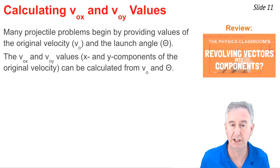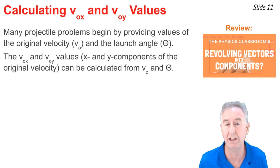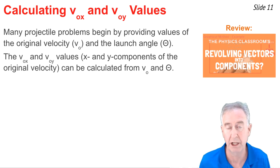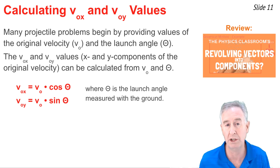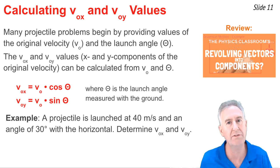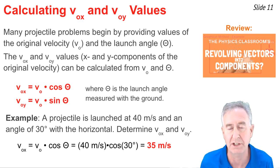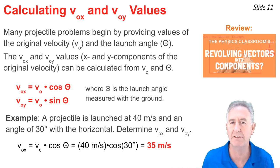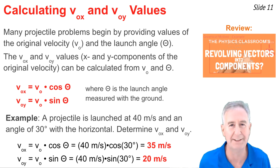Knowing the original Y velocity is essential for calculating time in the air. If your course involves math with projectiles, you need to know how to calculate VOY and VOX when given the original velocity and launch angle — which requires trigonometry. The equations use sine and cosine: VOX equals V₀ times cosine(θ), and VOY equals V₀ times sine(θ). For example, a projectile launched at 40 meters per second at 30 degrees: VOX equals 40 times cosine(30°), giving just under 35 meters per second; VOY equals 40 times sine(30°), giving exactly 20 meters per second.